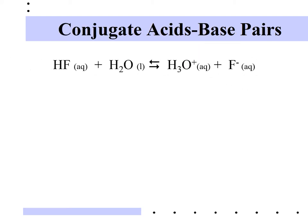Let's take a look at a typical acid-base reaction and identify conjugate acid-base pairs. The word conjugate simply means a partner. When HF (hydrofluoric acid, aqueous) reacts with water (liquid), equilibrium is established. Since HF is an acid, it gives away a hydrogen ion to the water, producing the hydronium ion (H3O+) and the fluoride ion (F−). The hydronium ion is a really important species in this unit — make sure you know its formula and name.